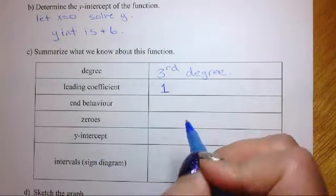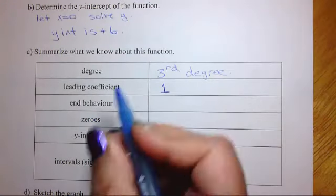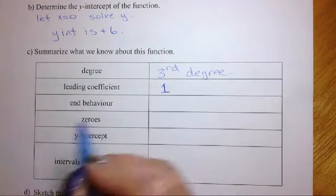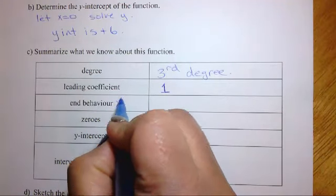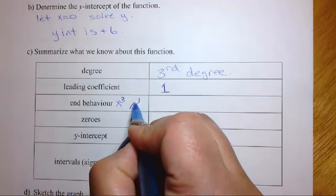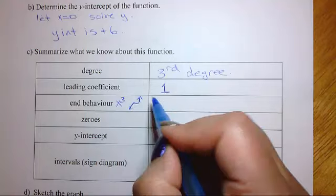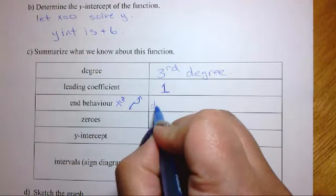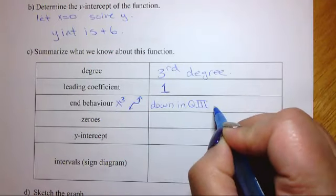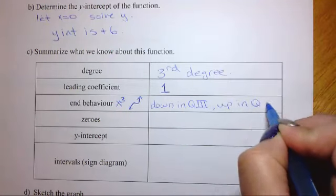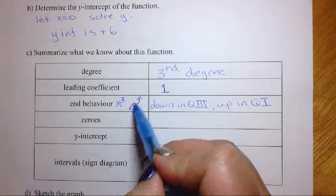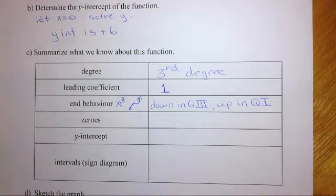And the end behavior, well, if we look at it, it's going to be, it's a positive function, and it also is an x cubed kind of, so we're going to look at the x cubed, and remember that it looked something like that, right? So it's going to have that kind of behavior. So what does that mean? That means that it is down in quadrant 3, and it goes up in quadrant 1. So since it's positive leading coefficient, it has a positive slope.